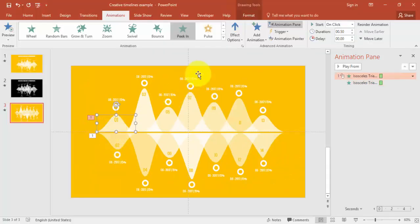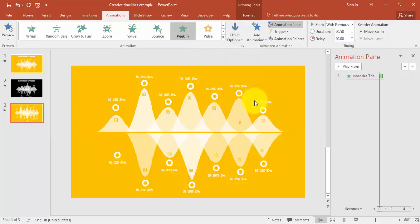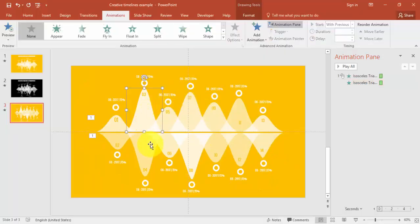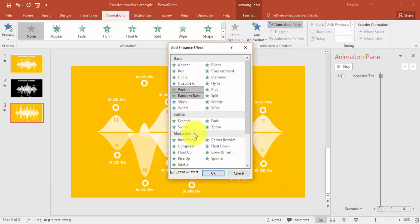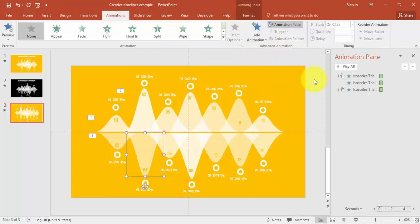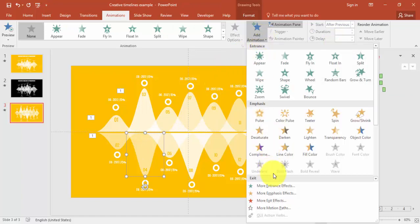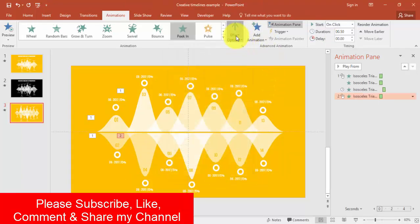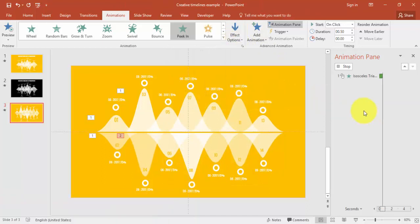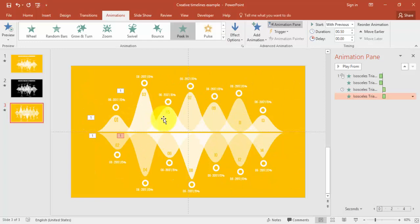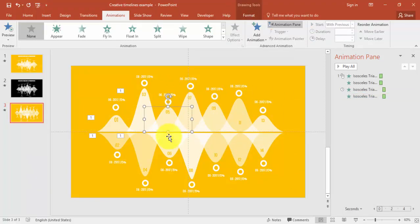Make sure the direction is set correctly — some shapes should come from the bottom and others from the top. Go to Add Animation, More Entrance Effects, select Peak In, and set the direction accordingly. Set the timing to After Previous or With Previous as appropriate. Continue doing the same for all remaining objects.